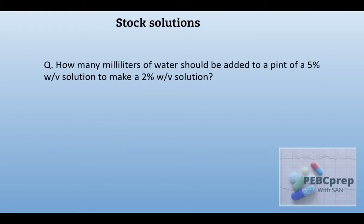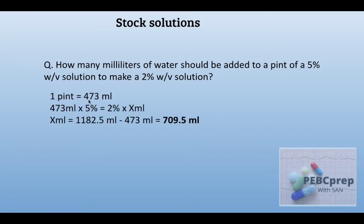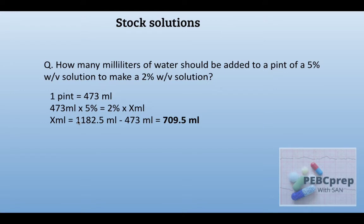Next question: how many milliliters of water should be added to a pint of a 5% w/v solution to make a 2% w/v solution? First we convert pint to milliliters — 1 pint equals 473 ml, which is our V1. C1 is 5%, C2 is 2%, and we find V2. When calculated, we get 1182.5 ml as final volume. We already have 473 ml, so we subtract and get 709.5 ml to add to achieve the 2% concentration.